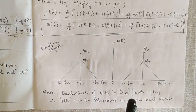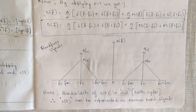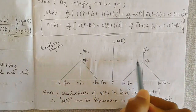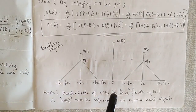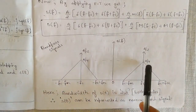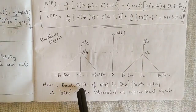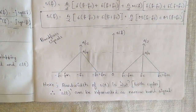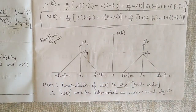In the frequency domain, the band-pass signal spectrum shows s(F) divided into two parts — one for negative and one for positive. For the negative part, the frequencies are −fc−fm, −fc, and −fc+fm; for the positive part, they are fc−fm, fc, and fc+fm, with amplitude a/4. The bandwidth of s(t) is 2ω for both cycles combined — ω for the negative cycle and ω for the positive cycle. Therefore, the signal s(t) under a sinusoidal carrier can be represented as a narrow-band signal.